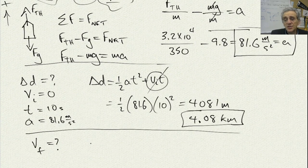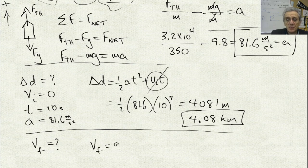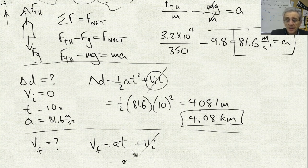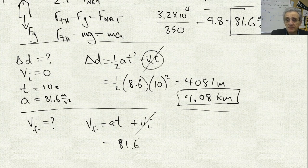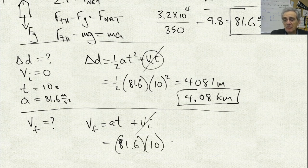And in order to do this one, probably the easiest equation to use here would be this one. Again, since my initial velocity is zero, and I already have my acceleration, I would go 81.6 times 10 seconds, which is going to give me 816 meters per second.